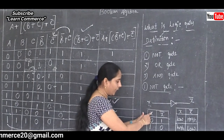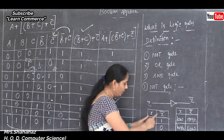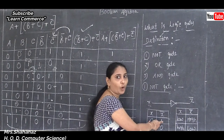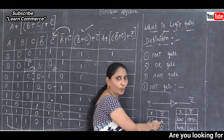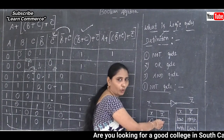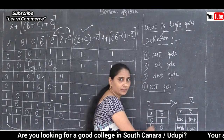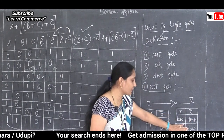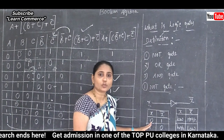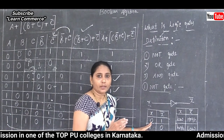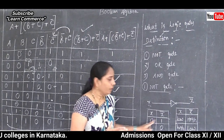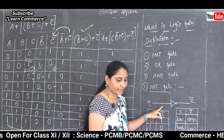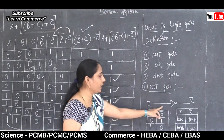In the NOT gate truth table with input X and output complement X: when input is 0, the output is 1 (it reverses or complements the value). When input is 1, the output is 0. These are the truth table values of the NOT gate.